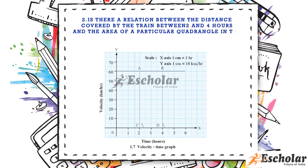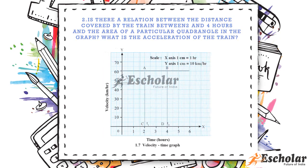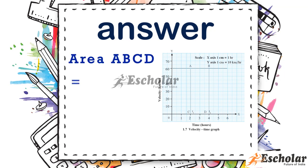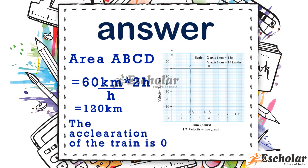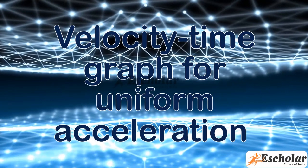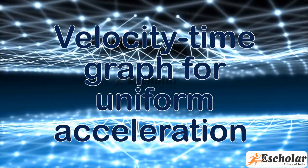Question two: Is there a relation between the distance covered by the train between two and four hours and the area of a particular quadrangle in the graph? Area ABCD = 60 km/h × 2 h = 120 km. The acceleration of the train is zero.